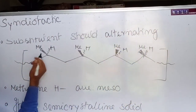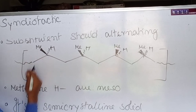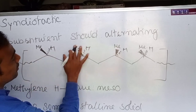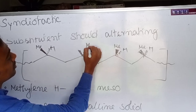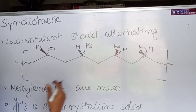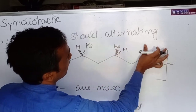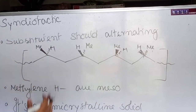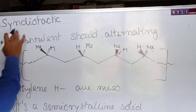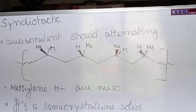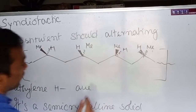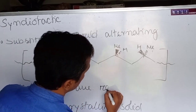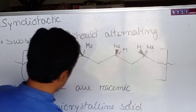Alternating means if at the very beginning the methyl group is towards your eye, then on the next carbon it will be towards the back of the plane, then front, then back — alternating in this pattern. This arrangement is called syndiotactic. Here the methylene hydrogen is racemic, whereas in isotactic it was meso.